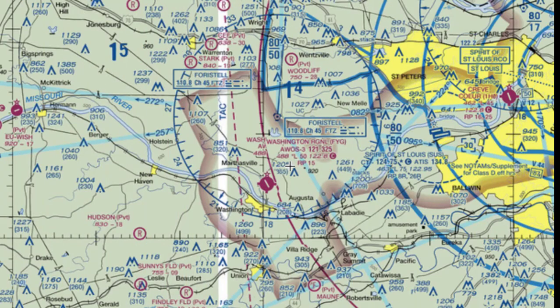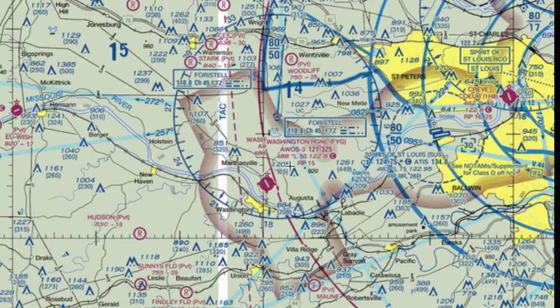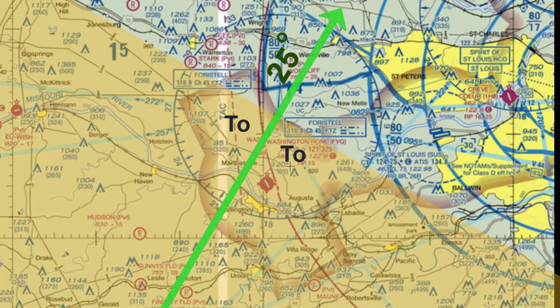In this example, the VOR we are going to focus on is the Forestell VOR. Notice the frequency here is 110.8. We will set NAV1 to that frequency. We are going to dial in to the VOR's 25-degree radial and be on the TO side of the VOR as it relates to that radial. I've outlined that area in a faded yellow color so you can see that.